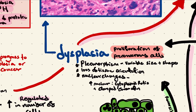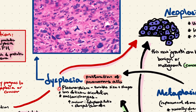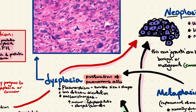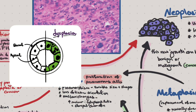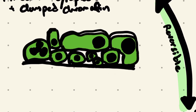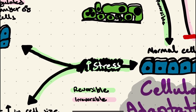Now let's look at dysplasia. Dysplasia is a proliferation of pre-cancerous cells. The most important distinction between dysplasia and neoplasia is that dysplasia is still reversible. Histologically, we observe pleomorphism — a variation in size and shape of cells, with some huge cells and some tiny cells. The normal orientation of cells is also lost in dysplasia. Finally, we can observe several nuclear changes, most importantly an increase in the nuclear-to-cytoplasmic ratio, which is clearly visible in the diagram — the nucleus is much larger relative to the cytoplasm compared to normal cells.